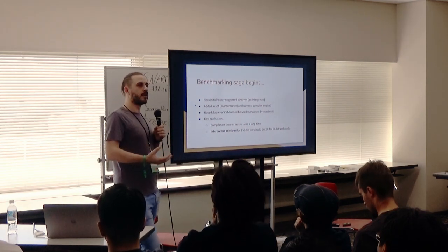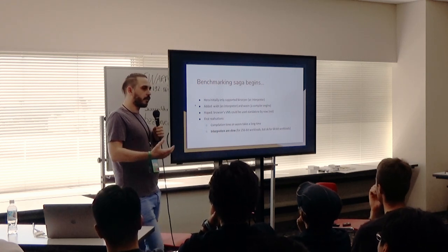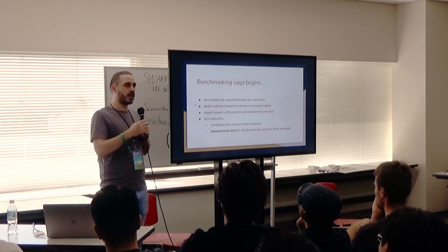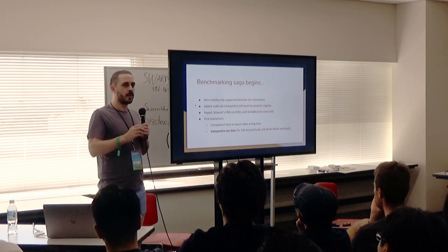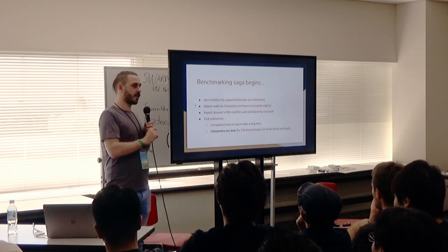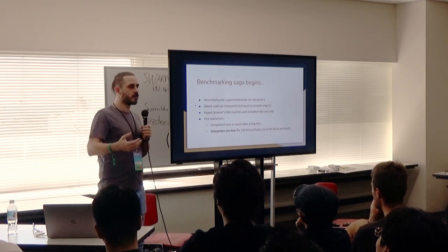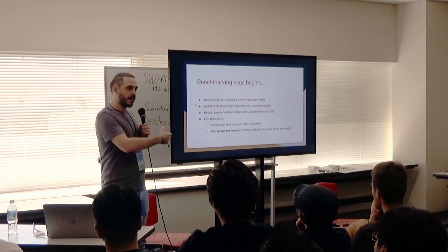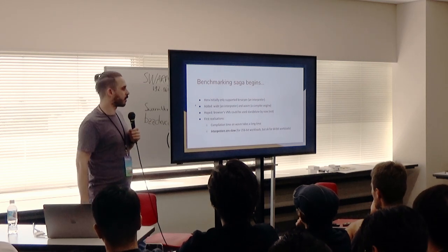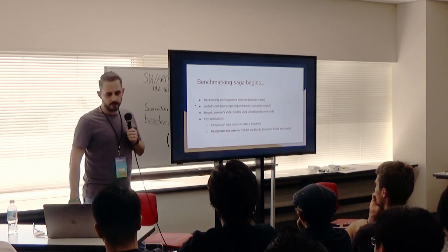The compilation time took way more time than we spent actually executing the code. In many cases, the total time was actually more than running it on an interpreter. A lot of the code we run on Ethereum runs for quite a short time — less than a second — and the compilation phase can take way longer than that. Interpreters may take less time, though we did find that Wabit was extremely slow, at least for 256-bit operations which EVM does, though okay for 64-bit.